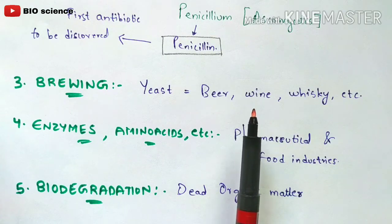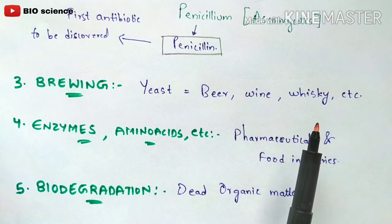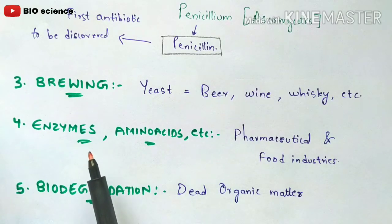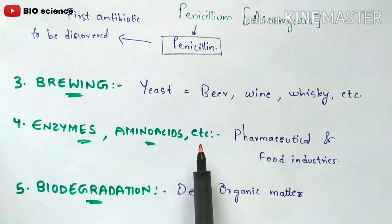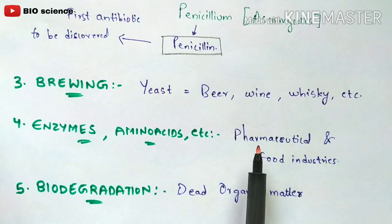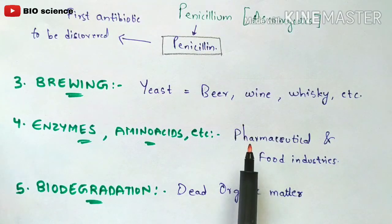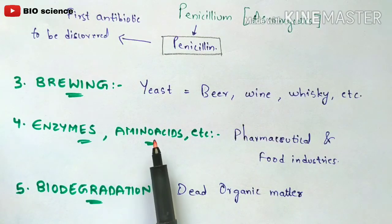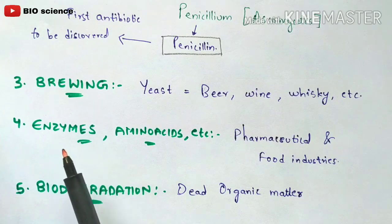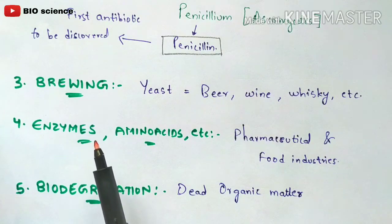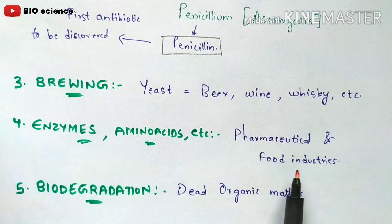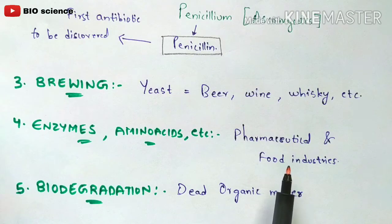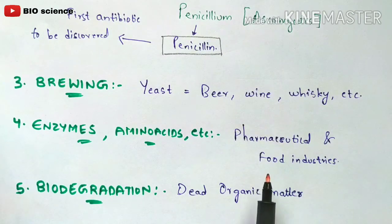Fungi is also used for the production of enzymes and amino acids in pharmaceutical and food industries. In pharmaceutical industries, fungi is mainly used for the production of digestive enzymes. In food industries, yeast is used for the preparation of bread, buns, and other bread-type products. So yeast plays an important role in both pharmaceutical and food industries.